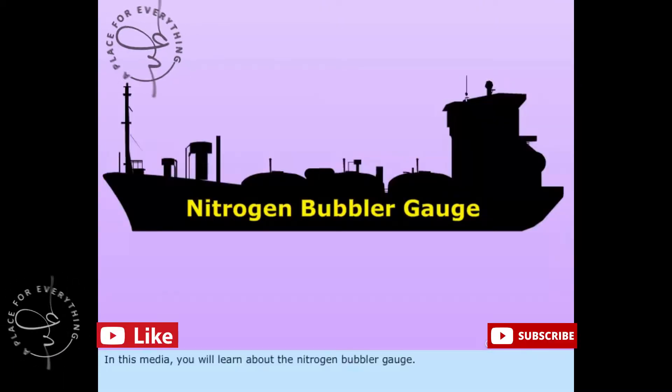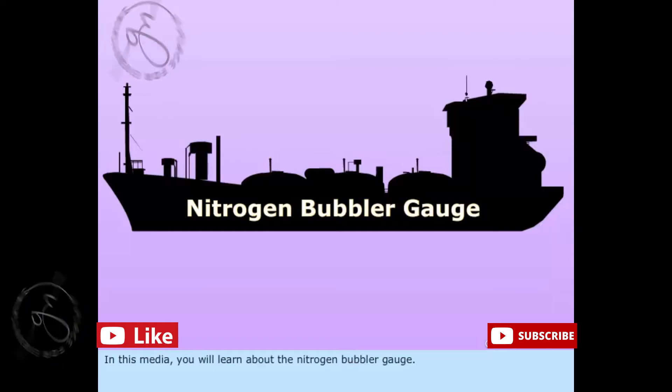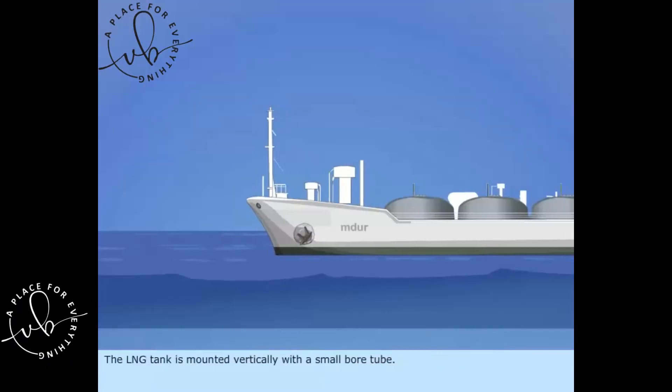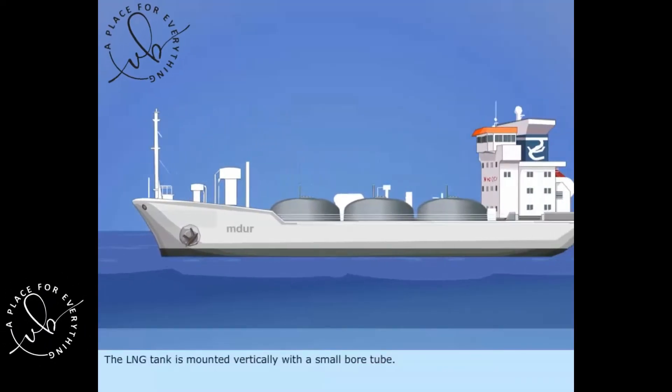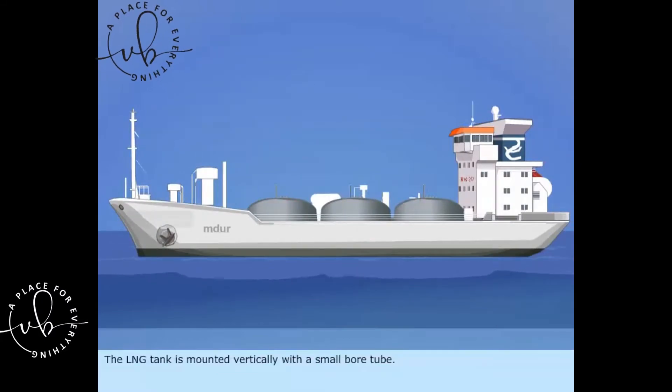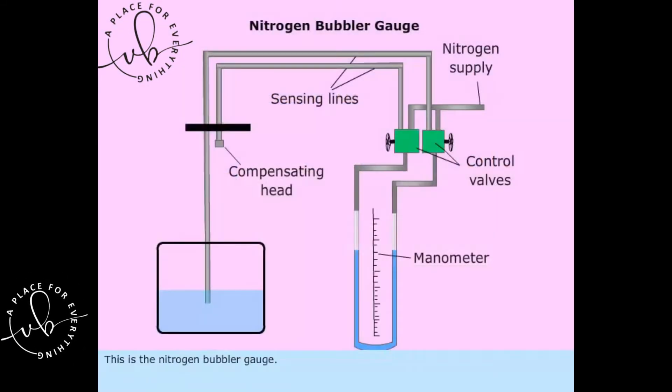In this media, you will learn about the nitrogen bubbler gauge. The LNG tank is mounted vertically with a small bore tube. This is the nitrogen bubbler gauge.